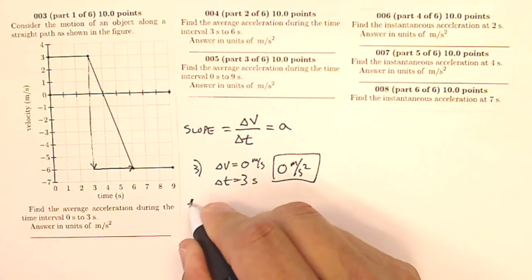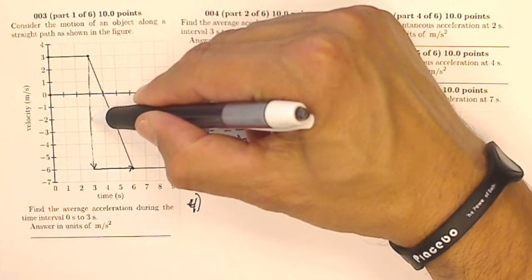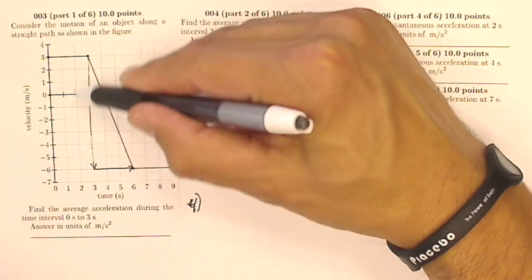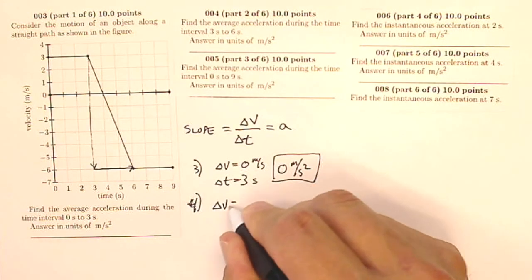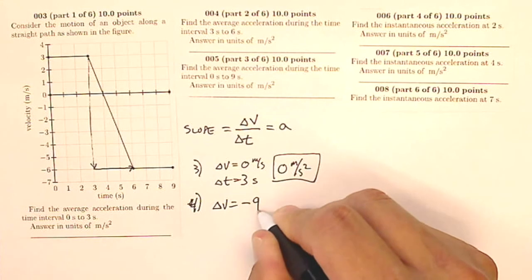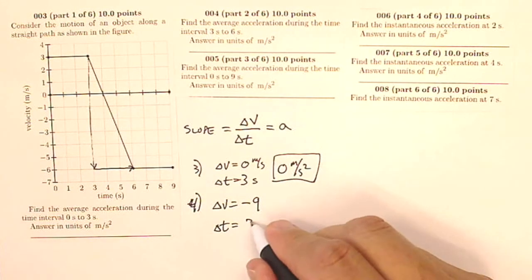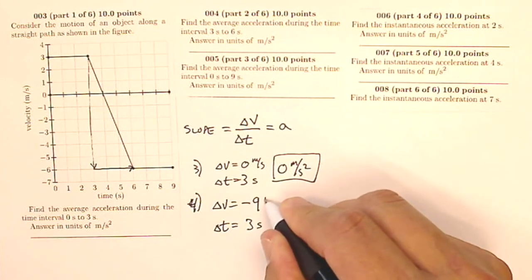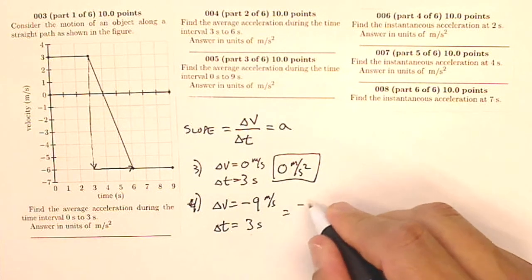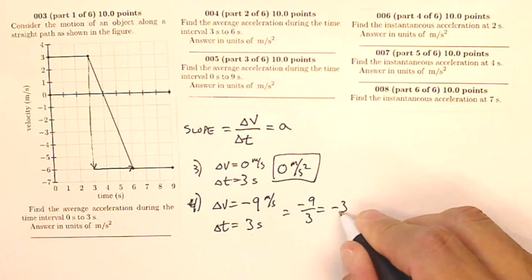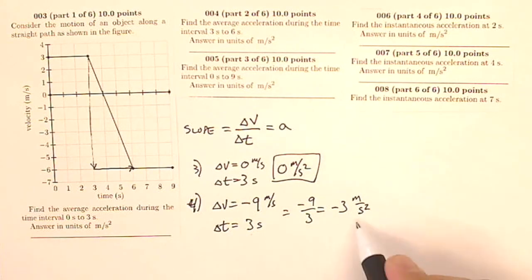For number four, I've got a change in velocity from three to negative six — that's a change of nine. So my change in velocity is going to be negative nine, and the amount of time that goes by is three seconds. Negative nine meters per second in three seconds is my rise over my run. So that's negative nine over three, which gives me negative three meters per second per second — negative three meters per second squared.